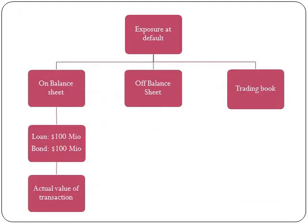EAD calculation will differ for different types of products, and products are segregated into three buckets. First is on balance sheet items, second is off balance sheet, and third is the trading book. So we will start with on balance sheet items, which would include loans, equity, bonds, etc.